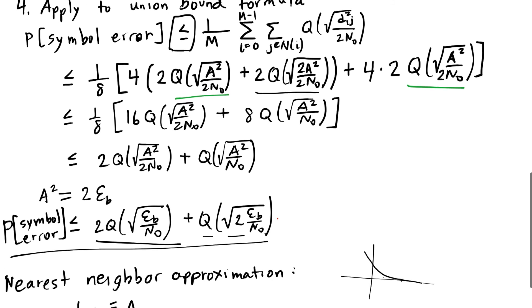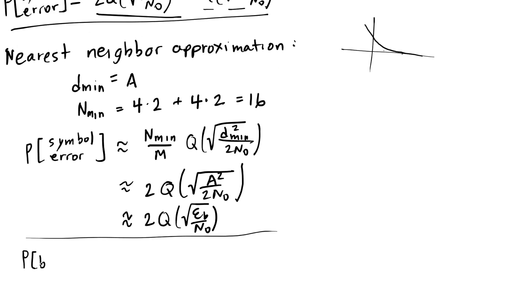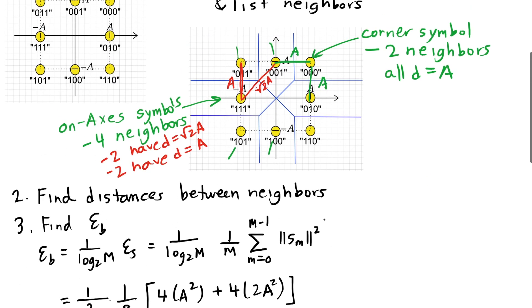Finally, I want to mention the probability of bit error. We've mentioned that the probability of bit error is approximately 1 over log base 2 of m times the probability of symbol error when we use gray coding. Are we using gray coding in this example? Well, let's look at the bit strings that we've assigned. We can assign bit strings that change by one bit for neighboring symbols, with the exception of the symbols between neighbors that are both on the axes.